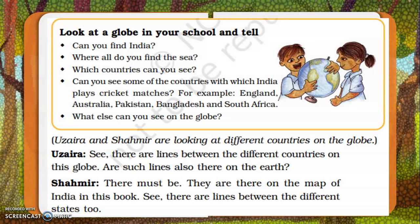Welcome back, greetings for the day dear children. Welcome back to the second part of this video. We were discussing how a globe as well as a map work. We can find countries, continents, and water bodies. However, the lines on the globe represent imaginary lines — on the real earth there is nothing like these lines. These lines are imaginary lines.